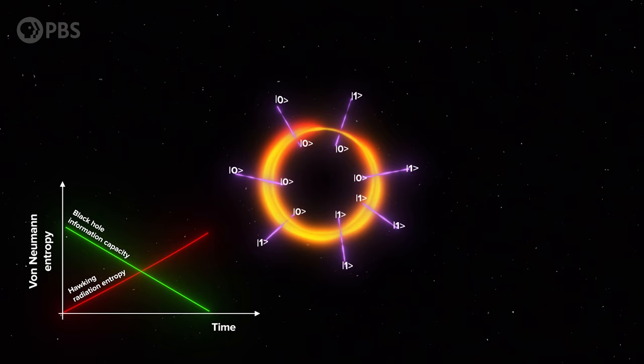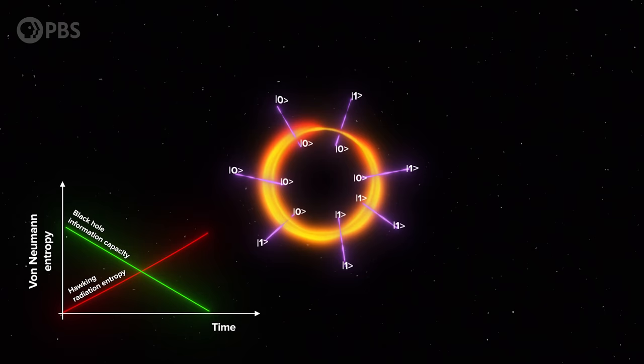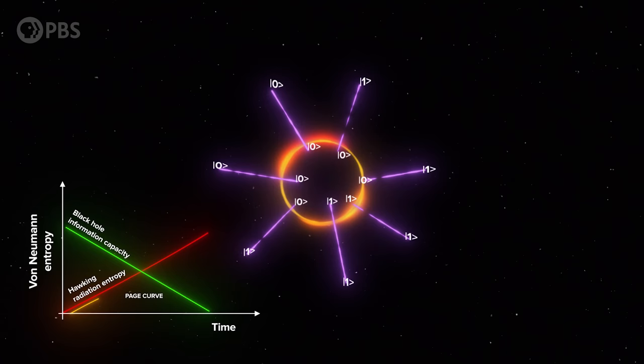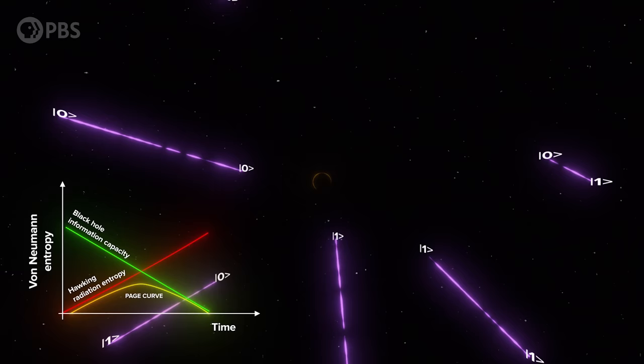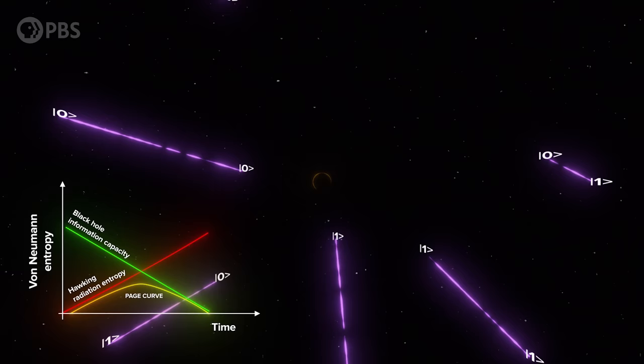If information leaks out this way, then the von Neumann entropy of Hawking radiation should rise over time as more and more radiation is produced, but then at some point the entropy starts to drop again because the information from past radiation is increasingly leaked out in newly emitted radiation. This is the Page Curve, figured out by physicist Don Page. It's actually the exact evolution of von Neumann entropy that must occur if Hawking radiation is our information escape route from the black hole. Any theory trying to solve the information paradox has to exactly reproduce the Page Curve.